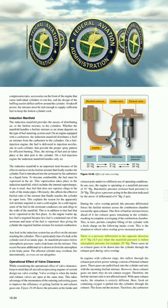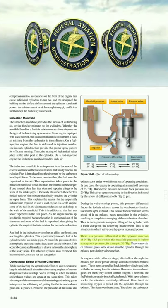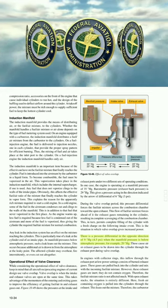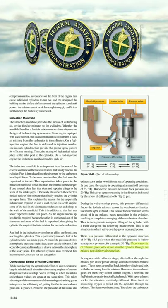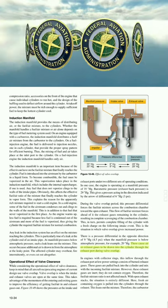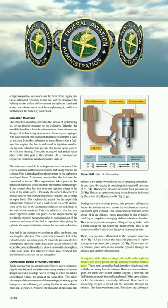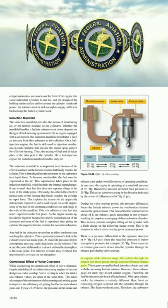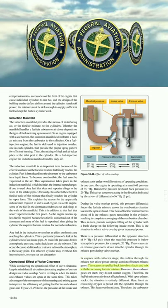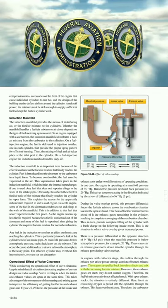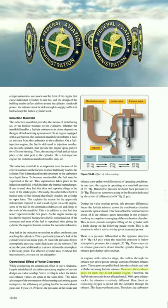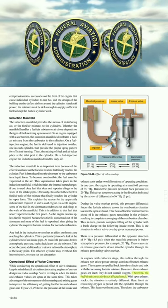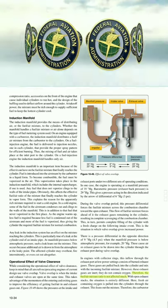When manifold pressure is below atmospheric — for example, 20 in. Hg — there is a pressure differential of 9 in. Hg (4.5 psi) in the opposite direction, causing exhaust gases to be drawn into the cylinder through the exhaust port during valve overlap. In engines with collector rings, this inflow consists of burned exhaust gases, which are inert and do not contain oxygen, so the fuel/air mixture ratio is not significantly affected.